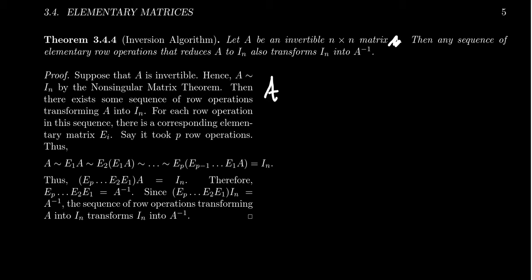So there's some sequence of row operations that gets you there. We have A, which we're going to call A0. We perform a row operation, we get A1. We perform a row operation, we get A2. And we do this P times until we get AP, which is the same thing as the identity matrix.